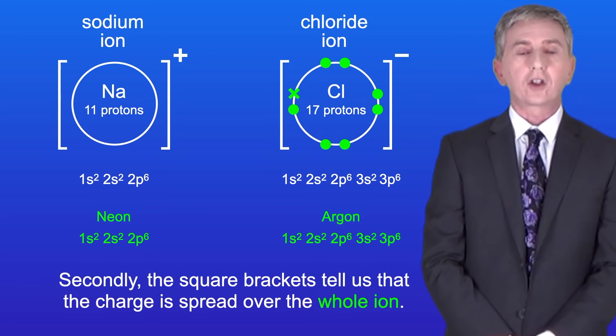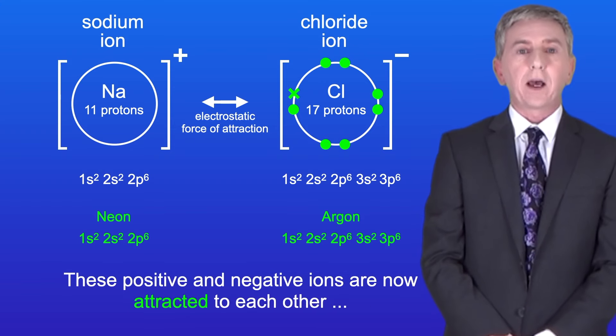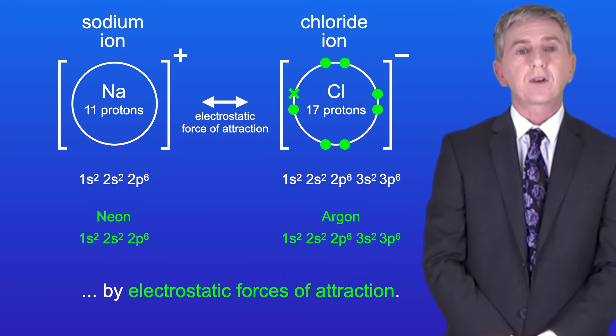Secondly, the square brackets tell us that the charge is spread over the whole ion. These positive and negative ions are now attracted to each other by electrostatic forces of attraction.